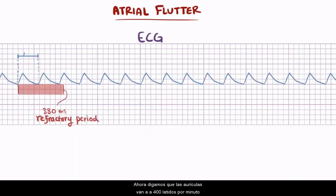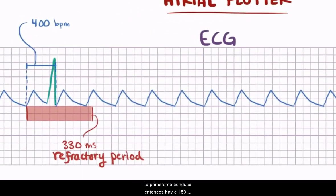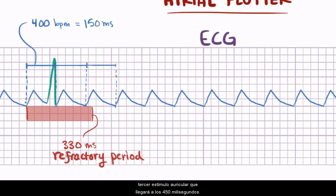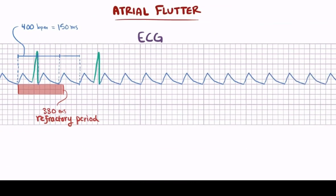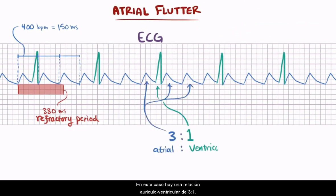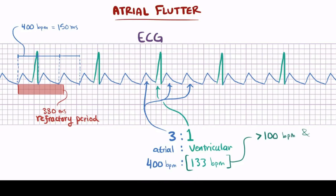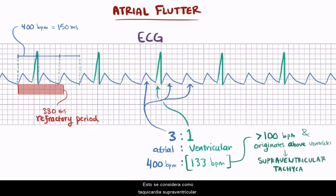Now let's say the atria are going at 400 beats per minute. The first beat conducts, then it's 150 milliseconds to the next one. The atrial beat after that lands at 300 milliseconds and the AV node still wouldn't be ready, meaning the ventricles wouldn't contract until the third atrial beat at 450 milliseconds. In this case it's a 3:1 atrial-to-ventricular rate — 400 atrial beats per minute to 133 ventricular beats per minute. Because the ventricles are contracting at more than 100 beats per minute and the source originates above the ventricles, this is considered a supraventricular tachycardia.